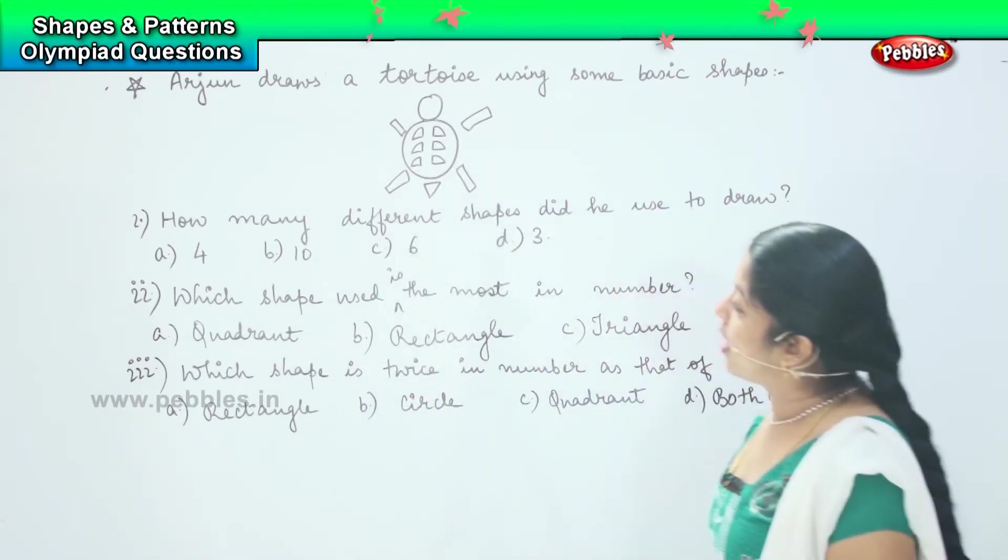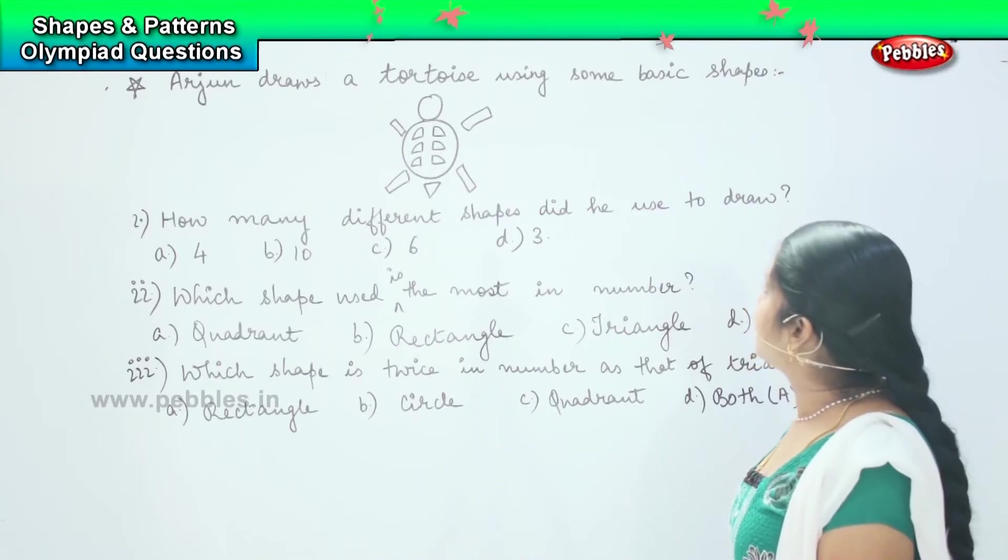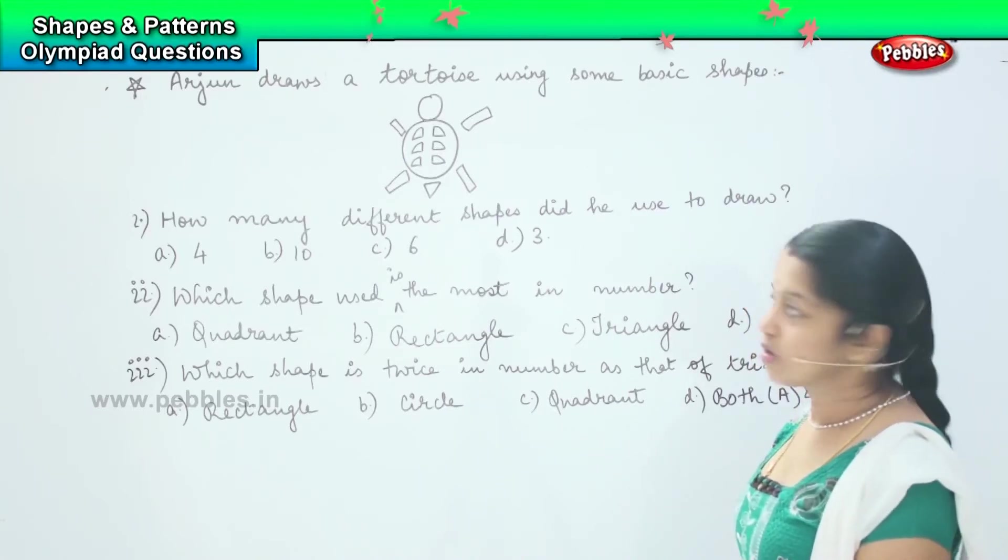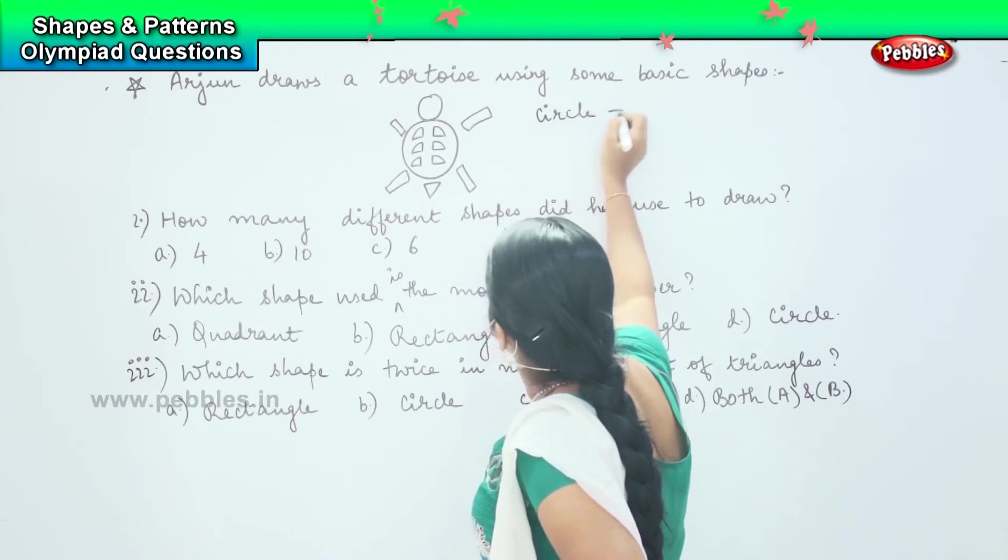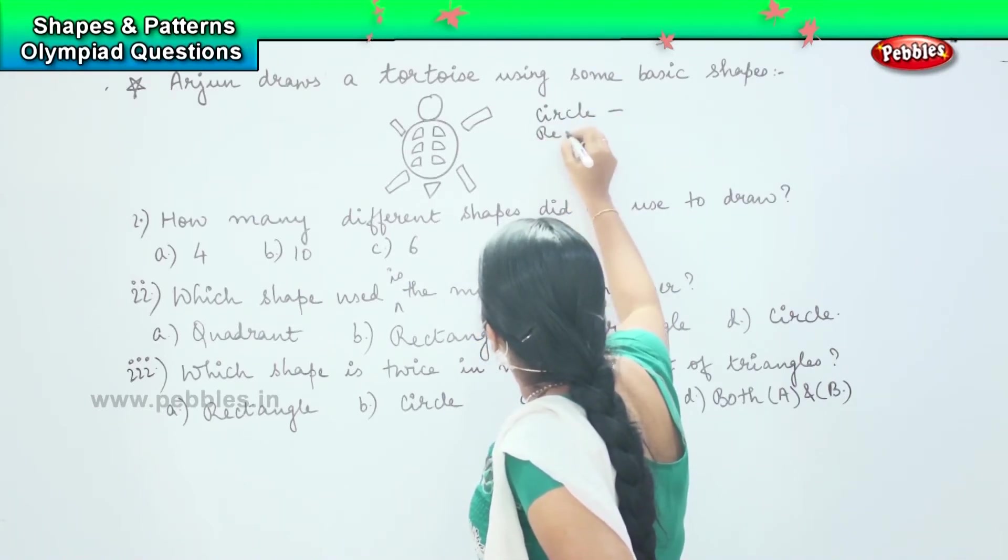Okay, so now how many different shapes did he use to draw? So let us see how many shapes he has drawn: a circle, then he had drawn a rectangle,